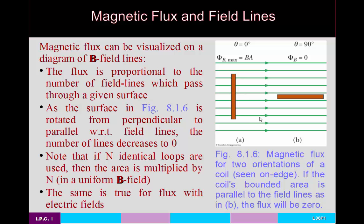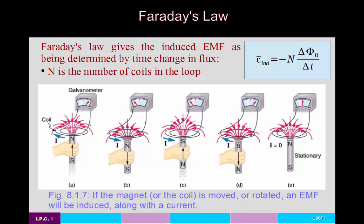It's worth noting that if you add more loops, that's like adding more surfaces. So if you have N identical loops, the area is multiplied by N — if one loop has area A, then N loops have area N·A, and the flux increases by a factor of N. So Faraday's law gives the induced EMF as a function of the number of coils in the loop and the change in flux per unit time.